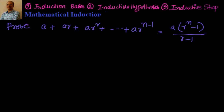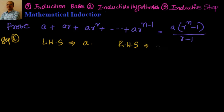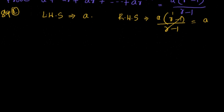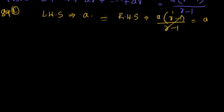So let's go ahead with the regular steps. Step 1: we have to prove for n equal to 1. LHS equals — for n equal to 1, the first term is a. On the RHS I have a into r to the power of n, that is r to the power of 1 minus 1, by r minus 1. r to the power of 1 is r, so r minus 1 by r minus 1 cancels out, and I will have a. So LHS is equal to RHS for n equal to 1.